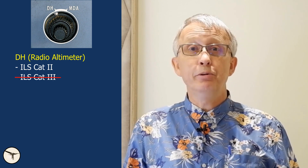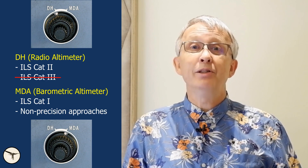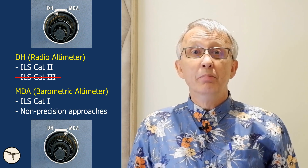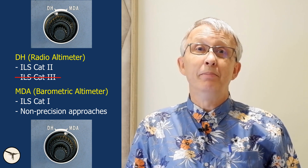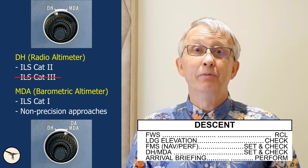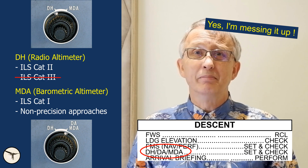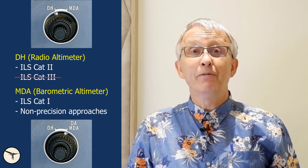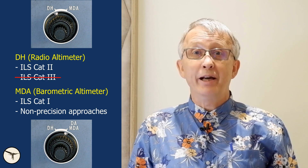DH is used for ILS CAT-2 and CAT-3 approaches. But since ATR aircraft are not certified for CAT-3 approach, we will only use it for CAT-2. MDA is used for all other approaches. It might be confusing that MDA is used for ILS CAT-1 approach, because MDA is associated with non-precision approaches. The correct label would have been DA, but reading the descent checklist as DH-DA would sound awkward. Minima for ILS CAT-1 is based on the barometric altimeter, and therefore we use MDA, which is the height above the runway threshold.